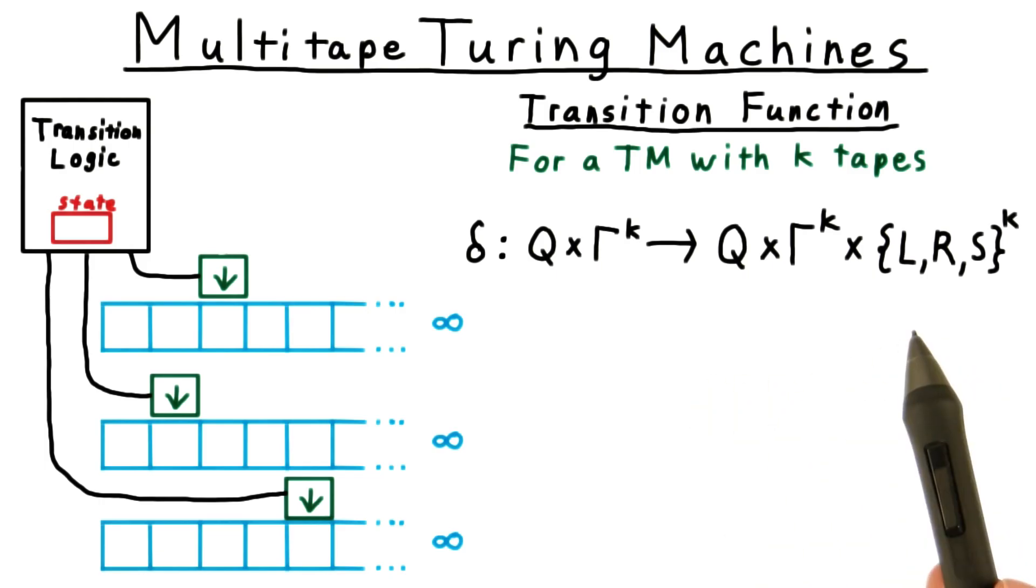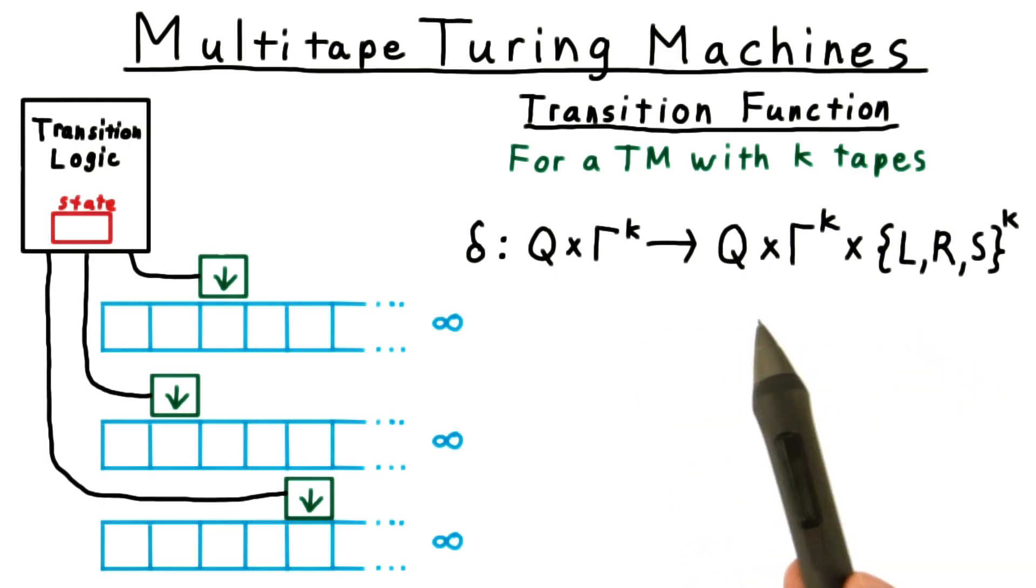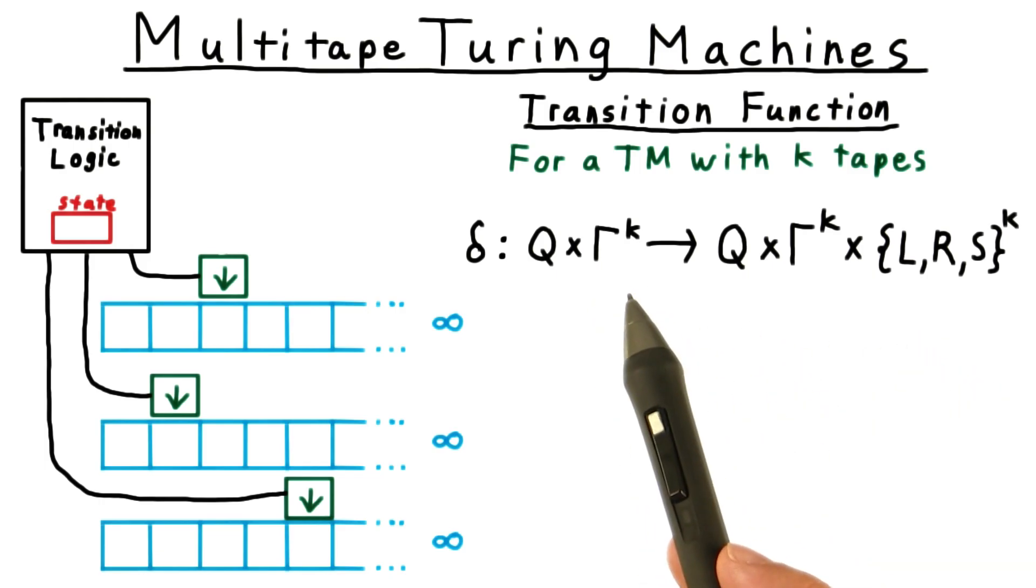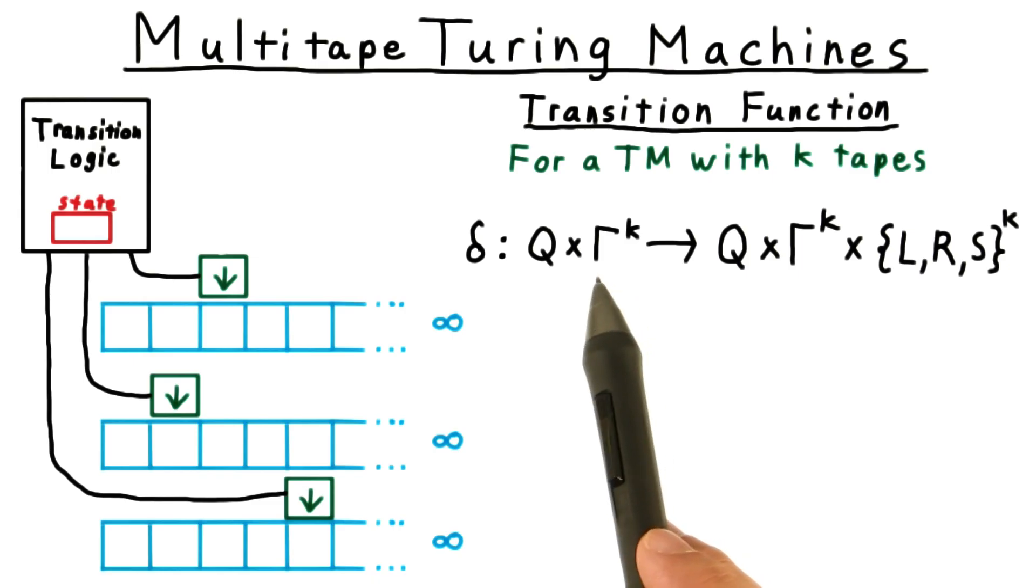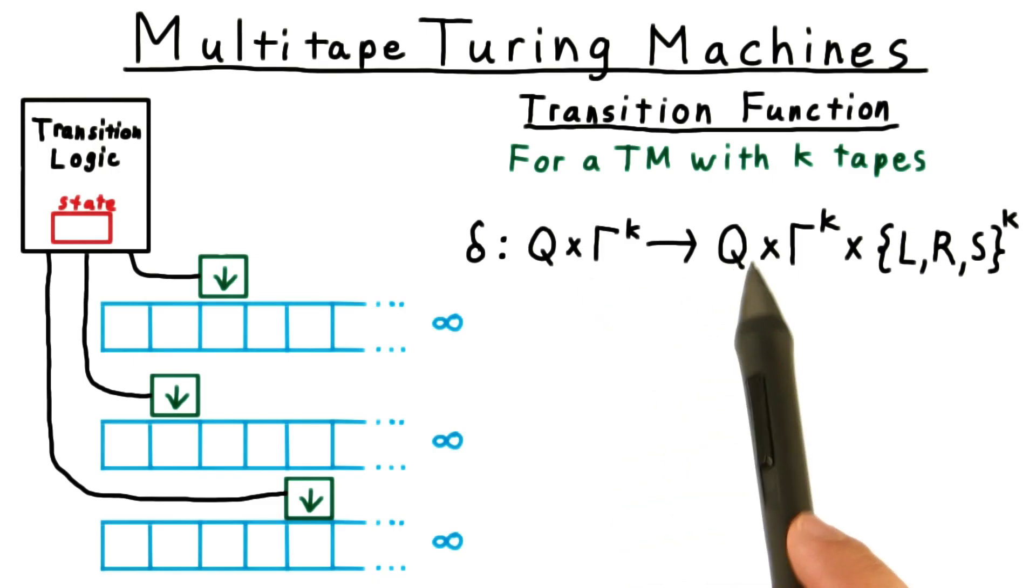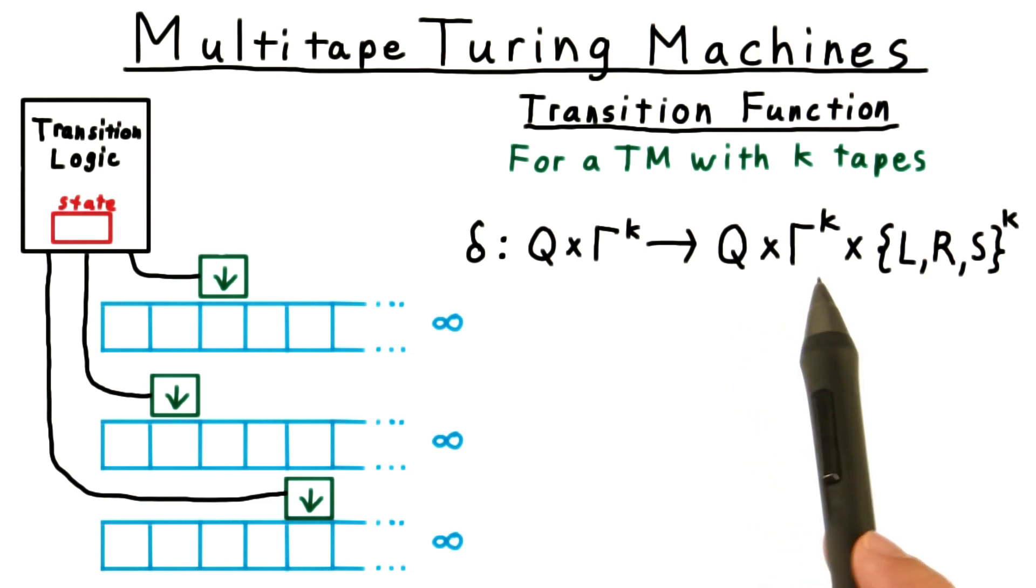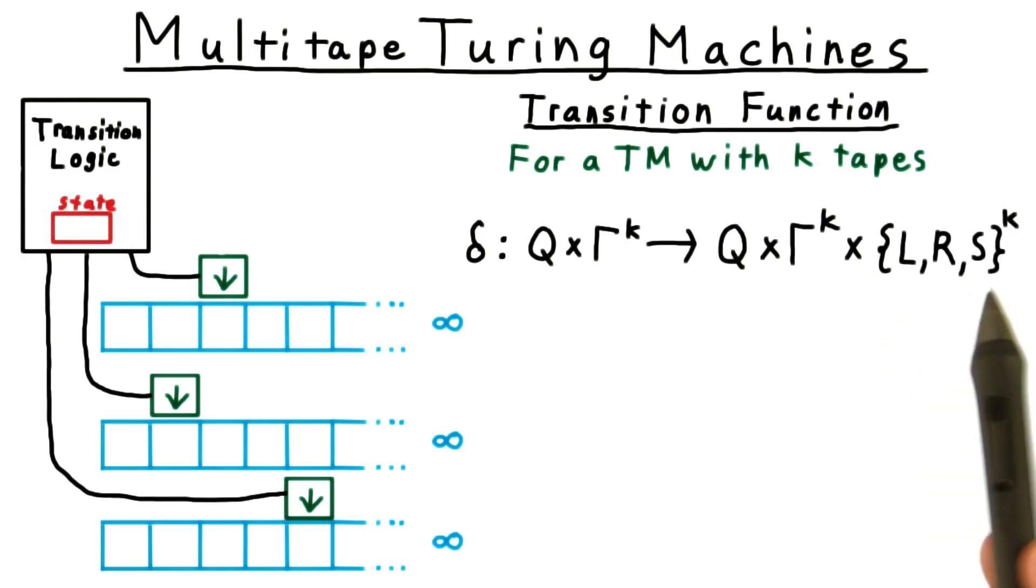We only need to redefine the transition function. For a machine with k tapes, the new transition function is from the Cartesian product of the possible states of the machine and the possible symbols under the tape heads, to the new states of the machine, times the symbols to write under the heads, times the possible directions to move the heads. Everything else stays the same.